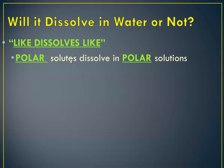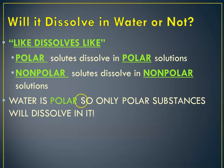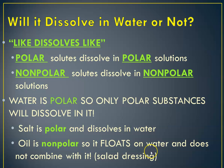Polar solutes will dissolve in polar solvents. For instance, sodium chloride, which is polar, will dissolve in water, which is also polar. And non-polar things will dissolve in non-polar things. Iodine is a diatomic molecule — it's very non-polar and molecular, so it does not like to dissolve in water, but it will dissolve in something like oil, which is non-polar. Water is polar, so only polar substances will dissolve well in it. Salt is polar, and salt dissolves in water. Oil is non-polar, so it floats on water because it's less dense, and it won't combine with it.